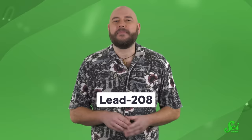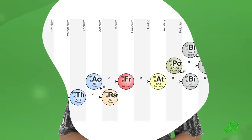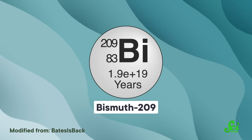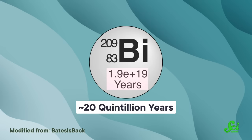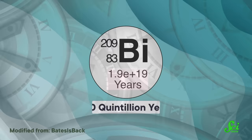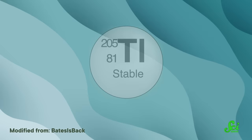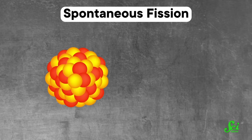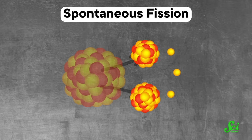There is a fourth decay chain that doesn't end with lead — the Neptunium chain. But the isotopes in this chain have such short half-lives, they've already gone through most of the steps. Scientists say it's extinct in nature, except for the very last step. The second-to-last isotope is bismuth-209, which has a half-life of nearly 20 quintillion years — 1.4 billion times the age of the universe — with the final step being thallium-205. There are also other exceptions, like atoms that start with fewer nucleons than any lead isotope, or supermassive nuclei that undergo spontaneous fission, cracking in two instead of emitting small particles.